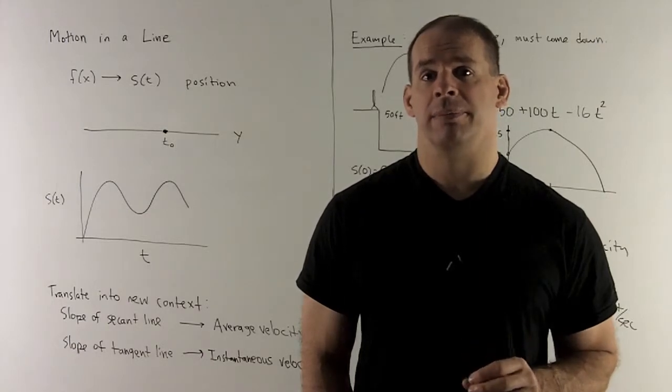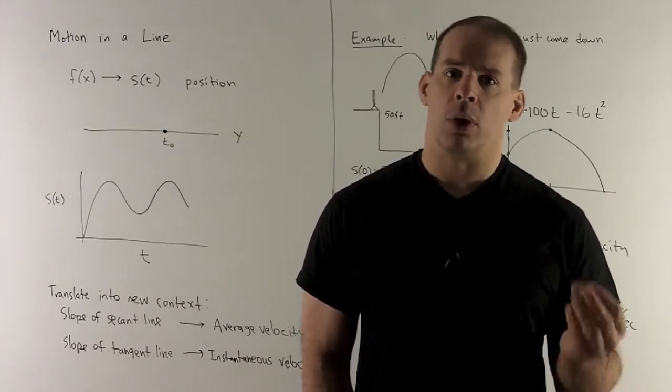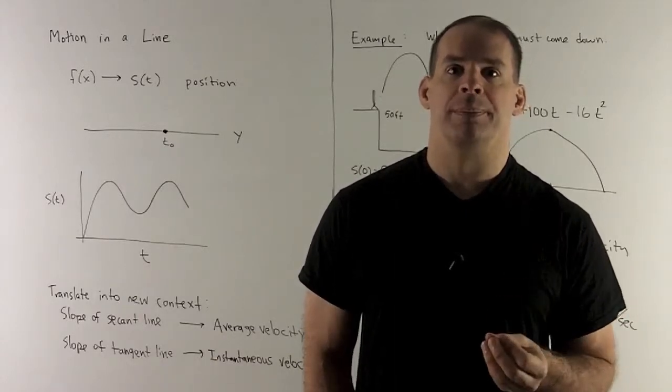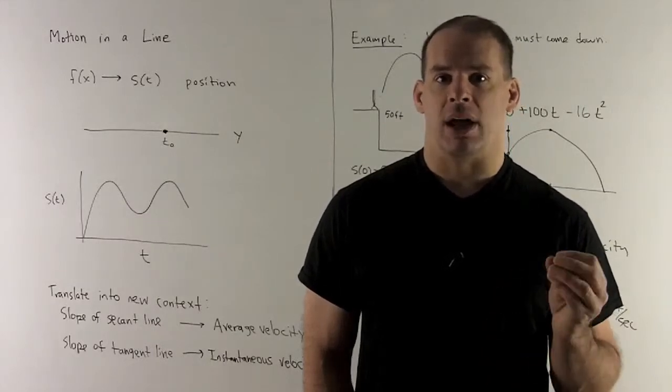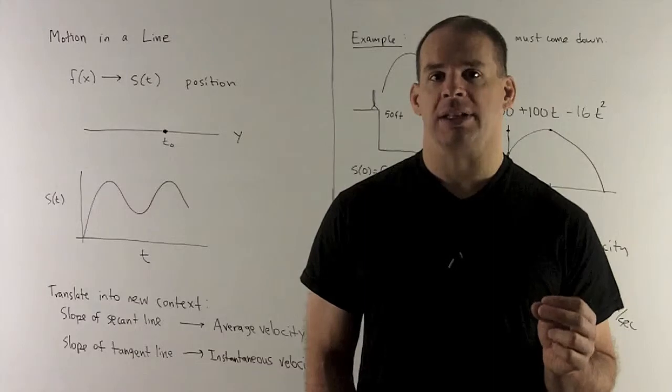An important application of the derivative is to motion in a line. So what do we have here? Before we had function f, now we're going to consider s. t is going to represent time, and s is going to represent the position of your object at time t.